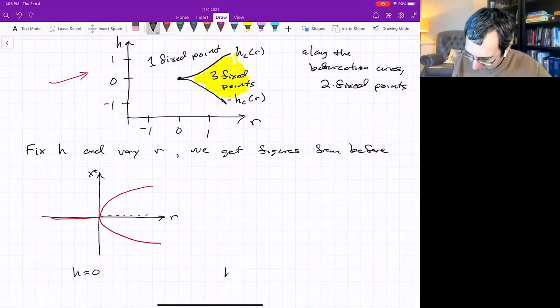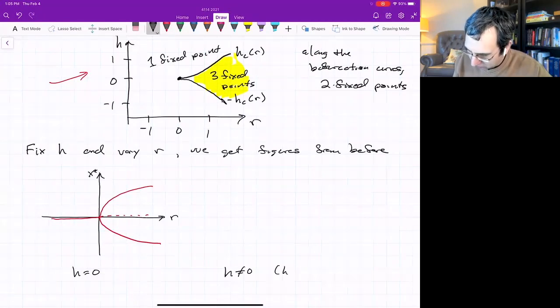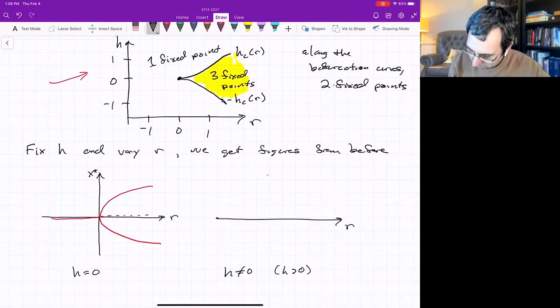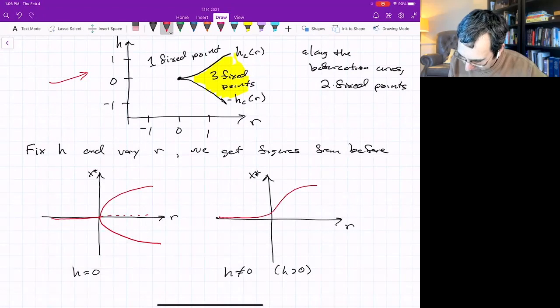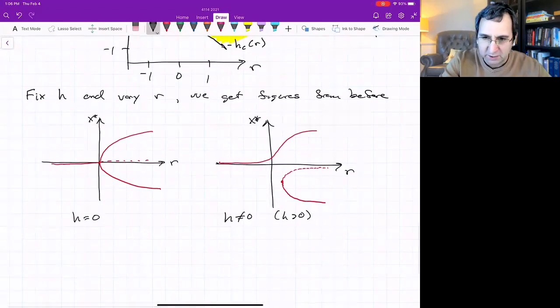For h equals zero, kind of the boring case, which just corresponds to one line in this parameter space diagram, we get things like this—the usual pitchfork. And for h not equals zero, I'll show the h greater than zero. There's r, there's x star. This curve goes up there. And below the r axis, there is a saddle node bifurcation.